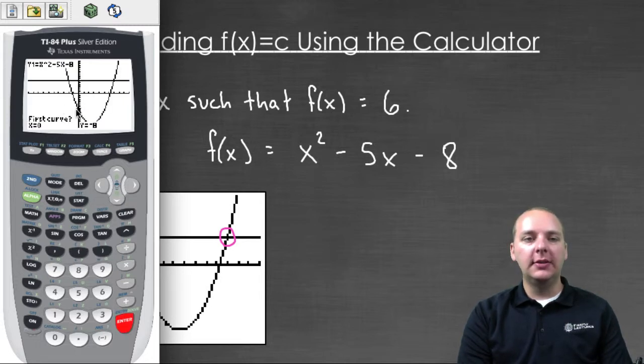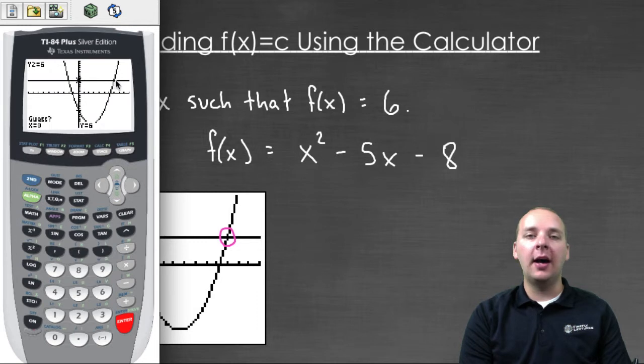So we'll choose intersect, and then it will say, is this okay for your first curve? We'll say yes, push enter. They'll say, is this okay for your second curve? We'll say yes, we'll push enter. And then give it a guess.